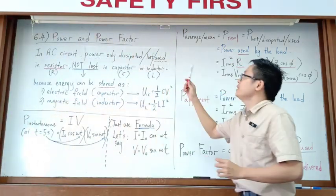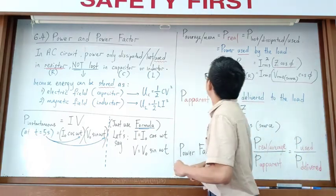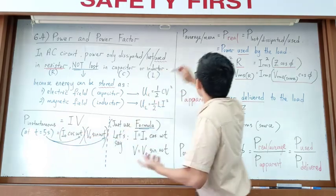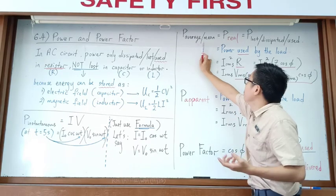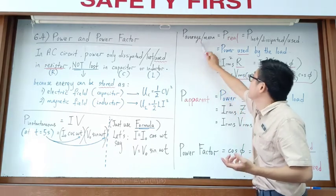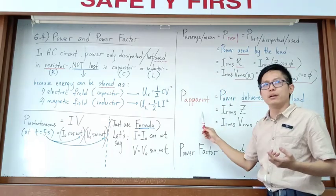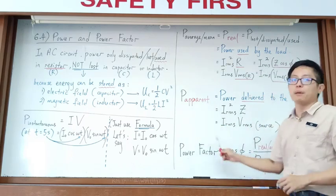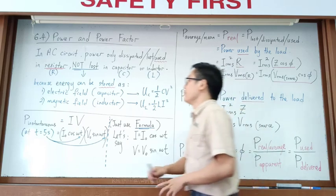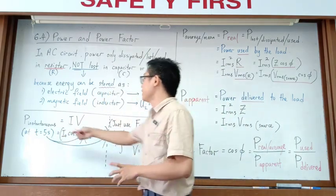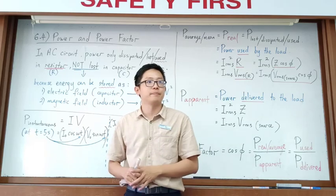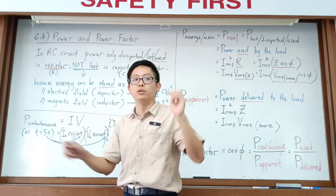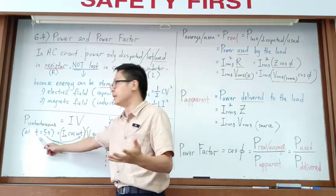For this topic, we need to know how to calculate instantaneous power, average (mean) power, and apparent power, as well as power factor. Instantaneous power means the power at a certain point in time — for example, at time t = 5 seconds.